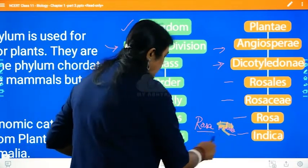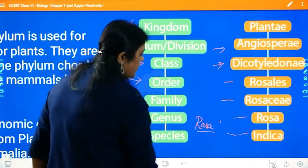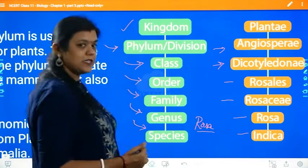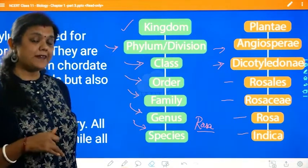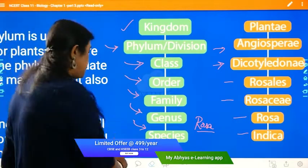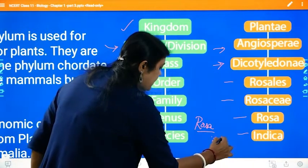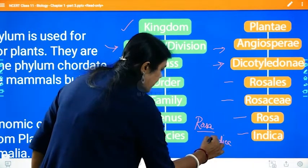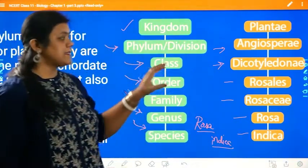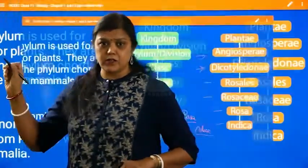The genus name is Rosa and the species name is indica. When writing a scientific name, the genus name should start with a capital letter and the species name should start with a small letter — indica, i-n-d-i-c-a. Each part is separately underlined. That is the name of the rose plant and its classification.